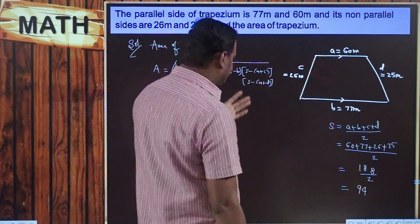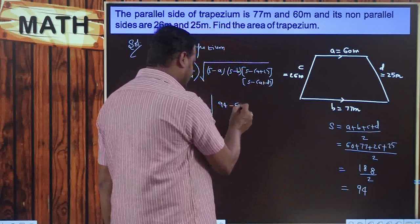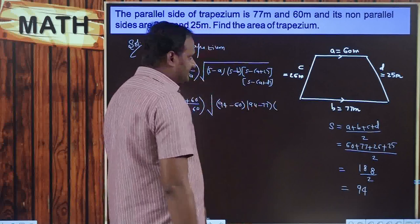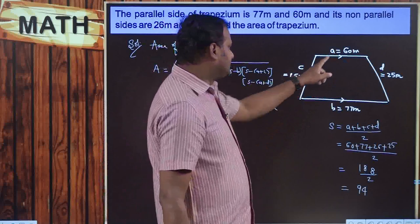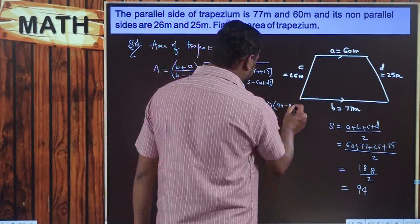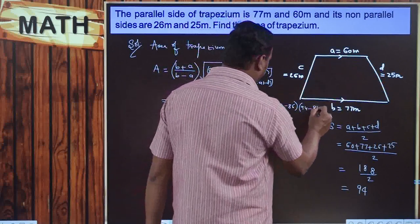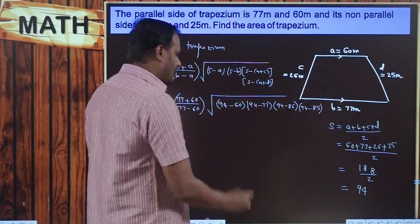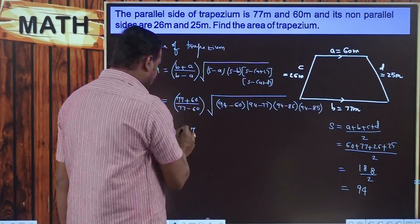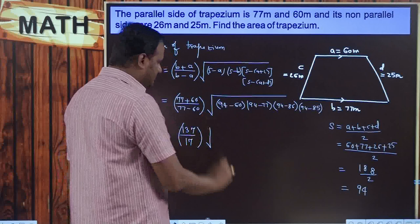Substituting s = 94: s − a = 94 − 60 = 34; s − b = 94 − 77 = 17; s − (a + c) = 94 − (60 + 26) = 94 − 86 = 8; s − (a + d) = 94 − (60 + 25) = 94 − 85 = 9. So we now have all four terms inside the square root.